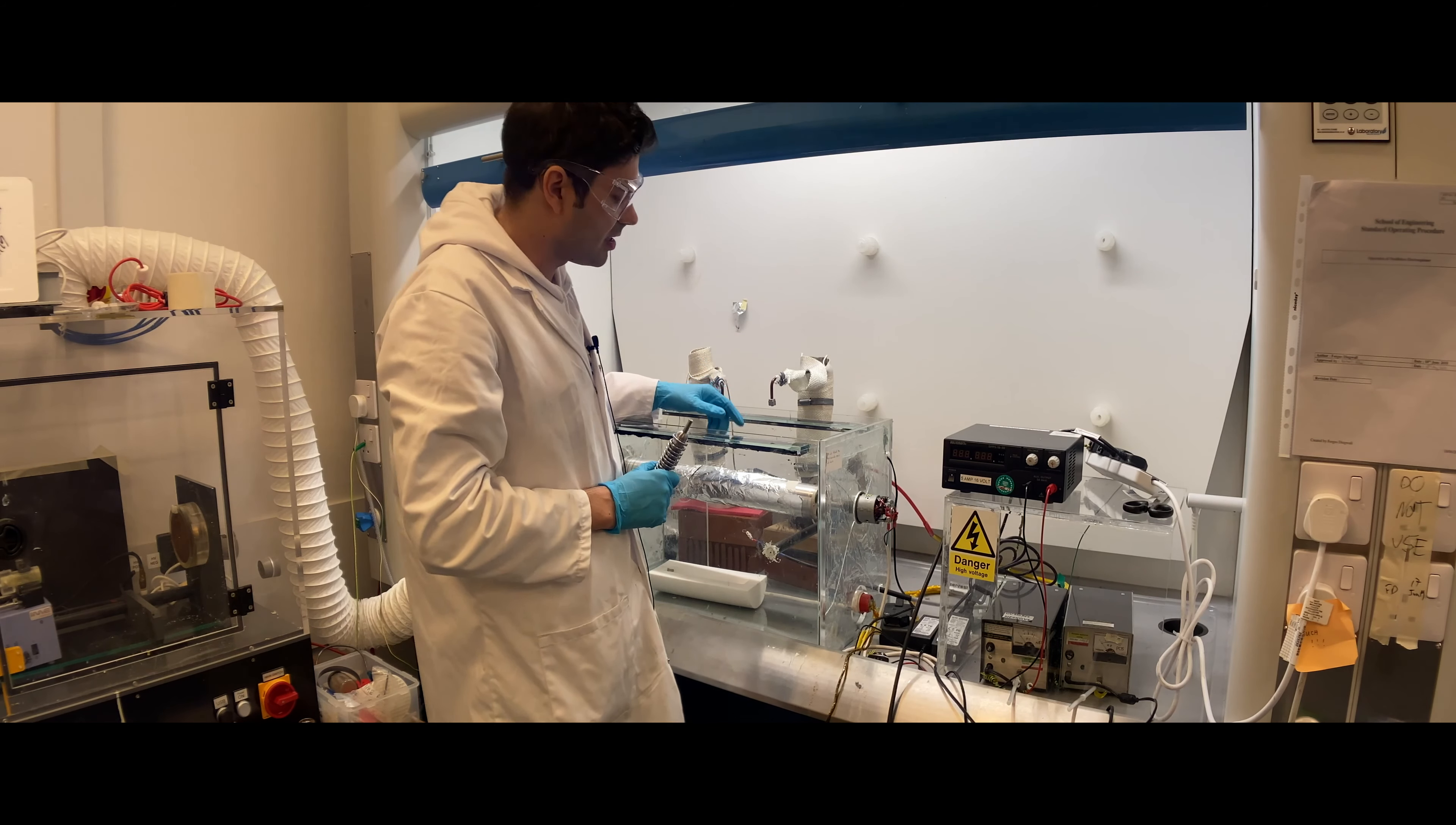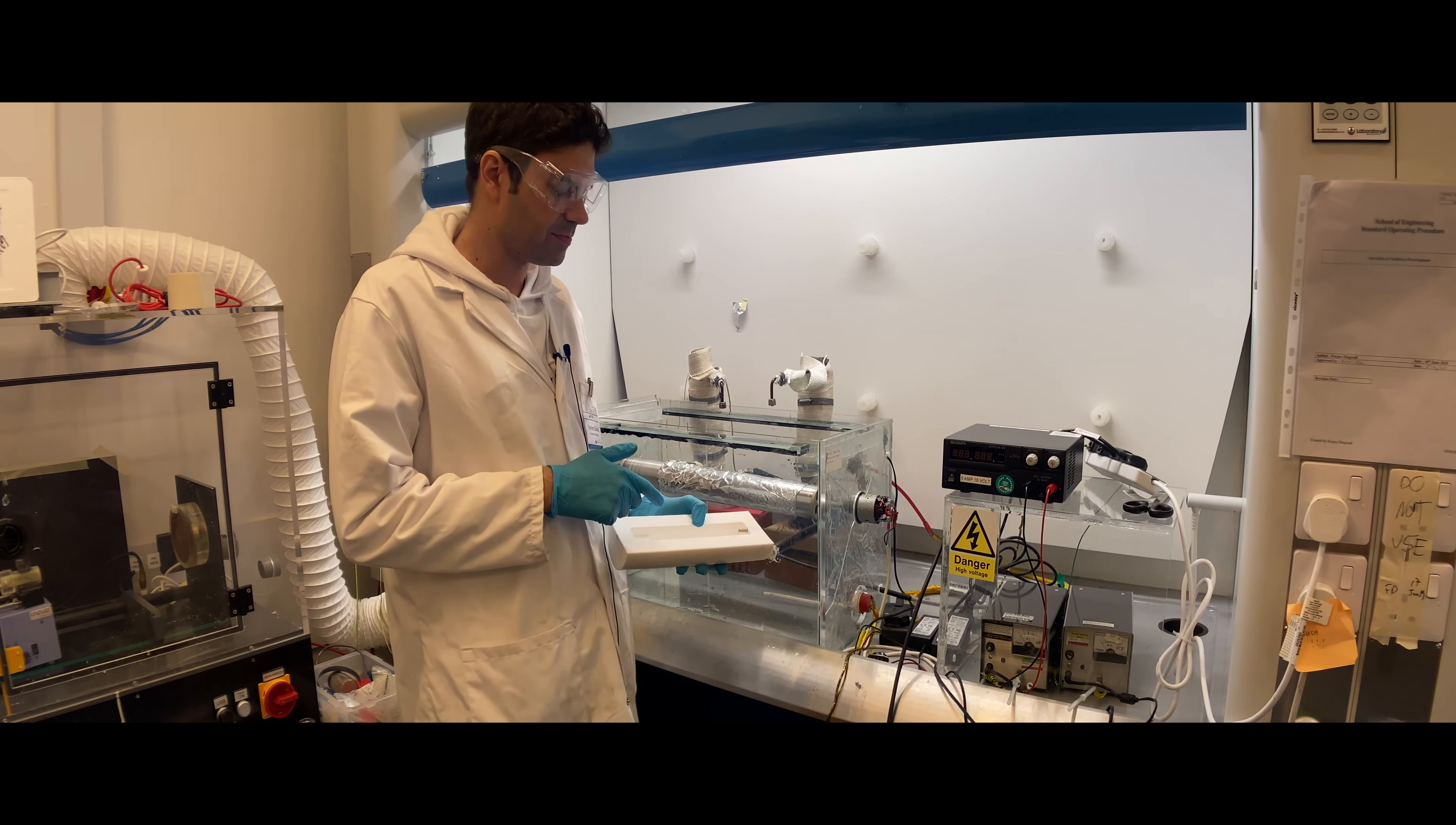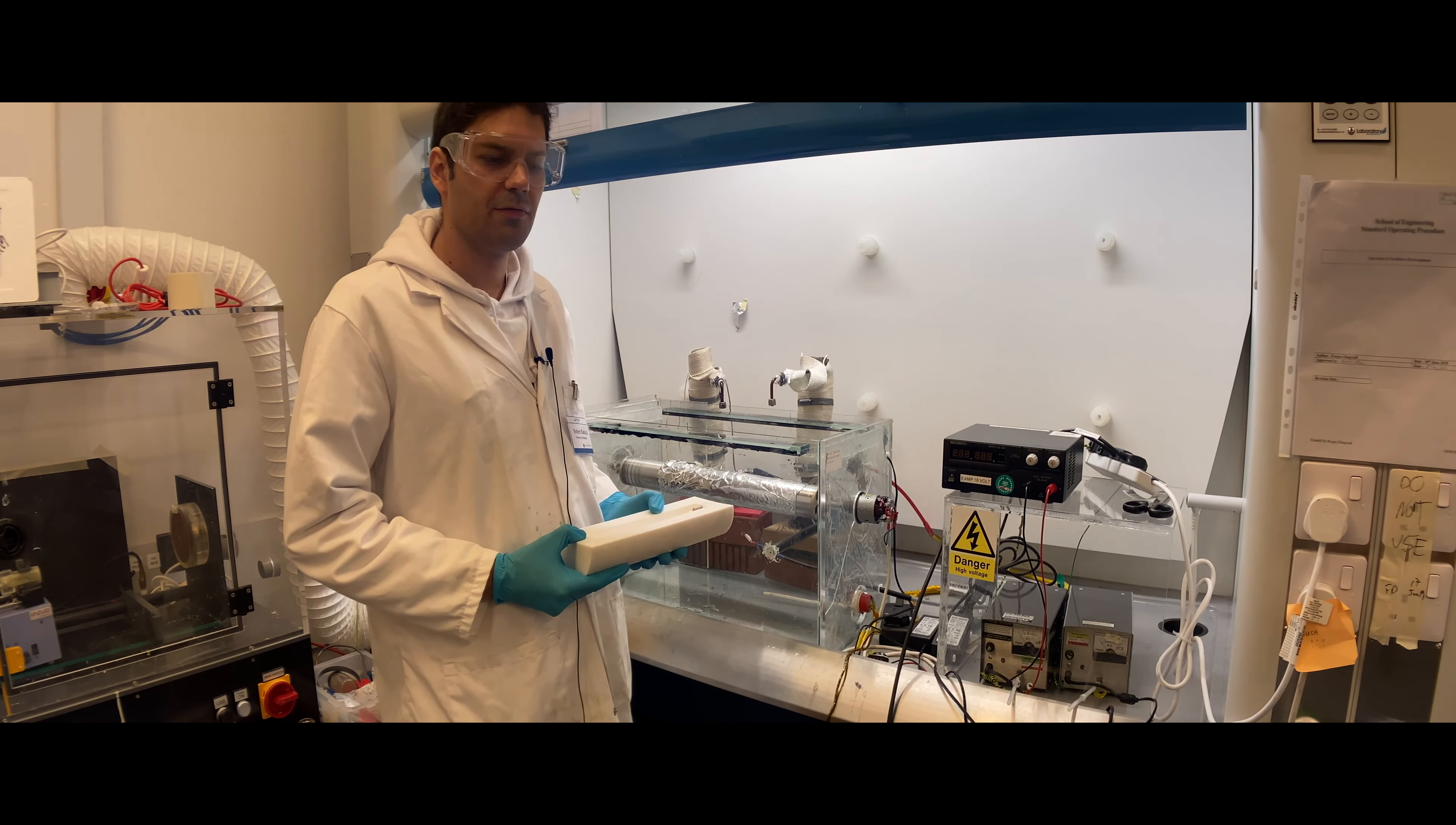You can collect the electrospun samples by taking off the aluminum sheet before you remove this. At the end, you should dispose of the leftover electrospinning solutions or you can put it back to the original bottle if you want to reuse it. I hope this instruction video was clear. Let me know if you have any questions.